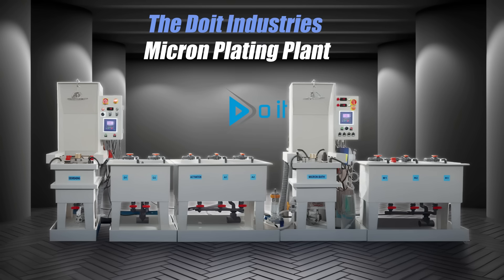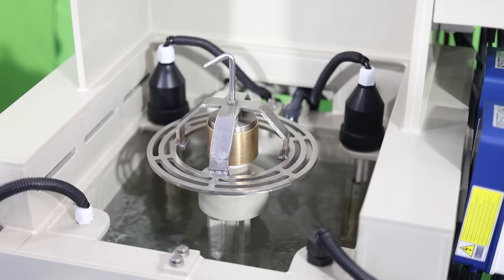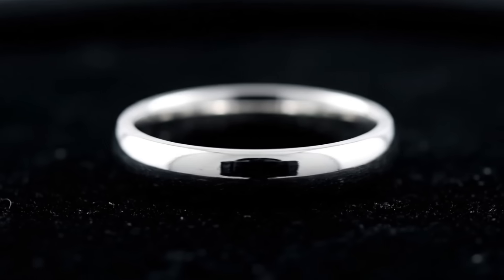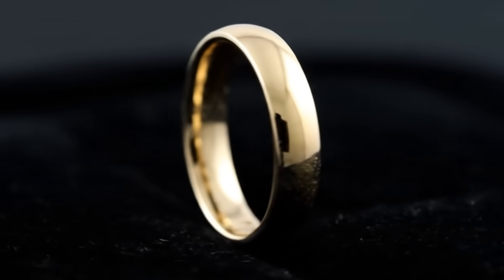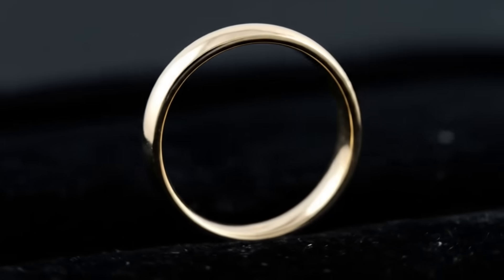Do It Industries' micron plating plant is specifically designed to meet the needs of gold and silver jewelry manufacturers. It enables the precise deposition of a thin layer of gold onto silver or higher carat gold onto lower carat gold.